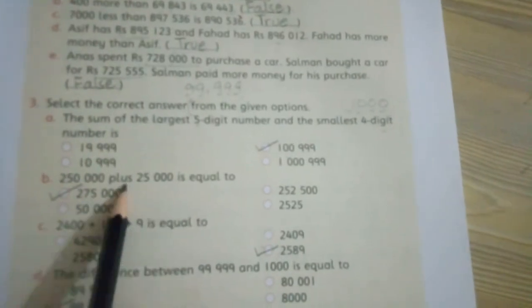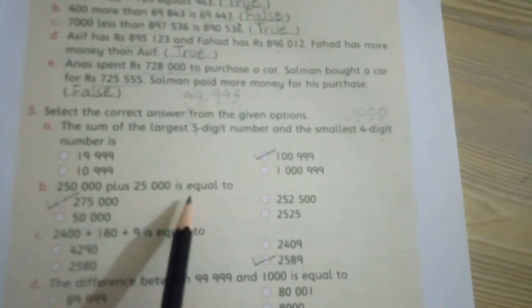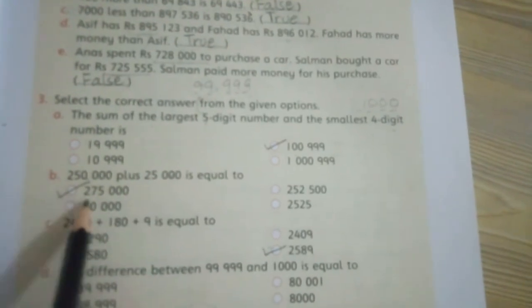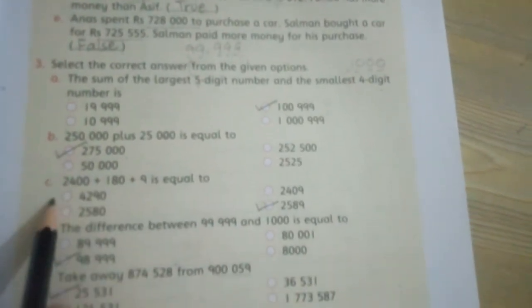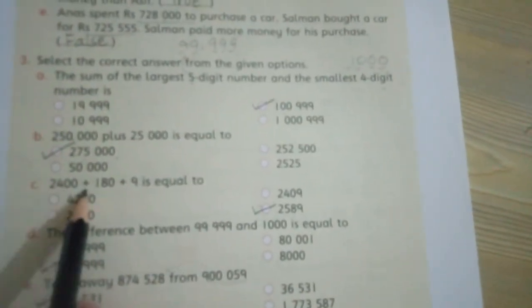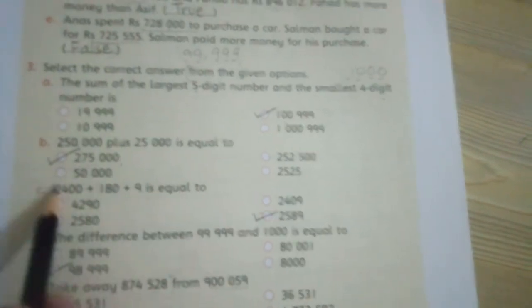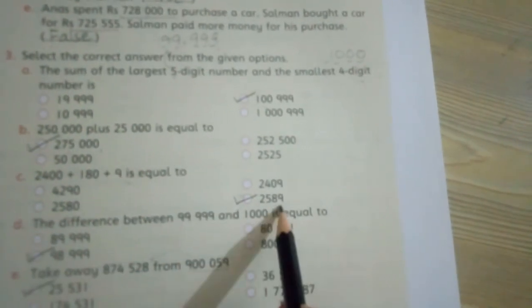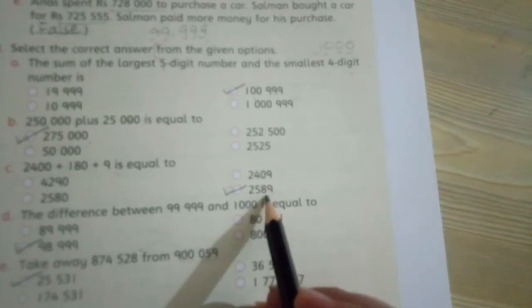Part B: Two hundred fifty thousand plus twenty five thousand equals what? When you add these two numbers, you get two hundred seventy five thousand. Part C: Twenty four hundred plus eighty plus nine. When you add all these three numbers, you will get two thousand four hundred eighty nine.